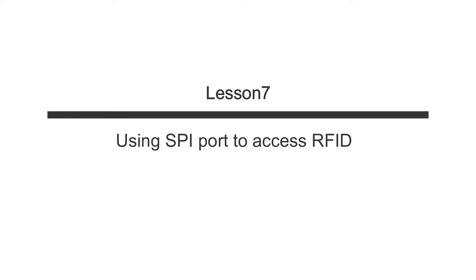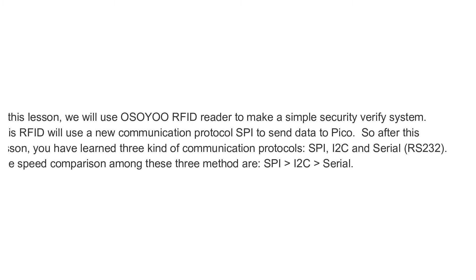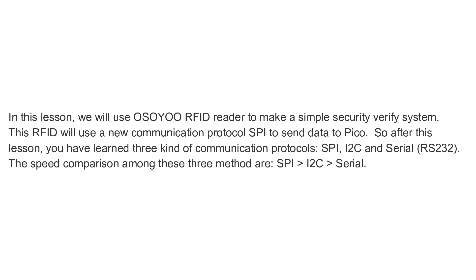Lesson 7: Using SPI Port to Access RFID Reader. In this lesson, we will use an RFID reader to make a simple security verification system. This RFID reader uses a new communication protocol, SPI, to send data to the Pico. After this lesson, you will have learned three kinds of communication protocols: SPI, I2C, and Serial. The speed comparison among these three methods is SPI > I2C > Serial.